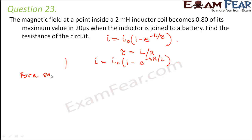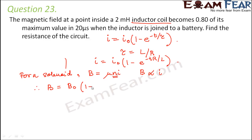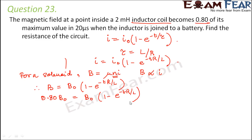For a solenoid (inductor coil), the magnetic field B = μ₀nI, so B is directly proportional to current. Therefore B = B₀(1 − e^(−tR/L)). Given B = 0.80 B₀, substituting: 0.80 B₀ = B₀(1 − e^(−tR/L)), so e^(−tR/L) = 1 − 0.80 = 0.20.